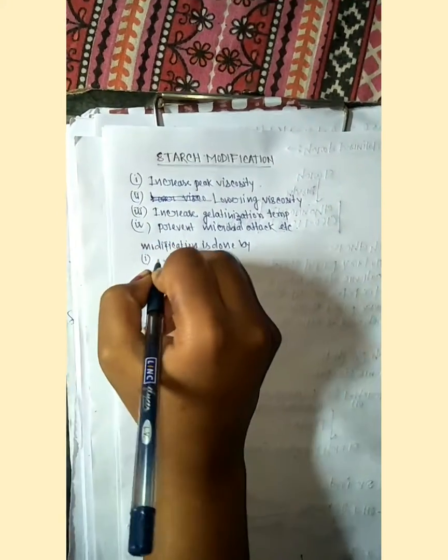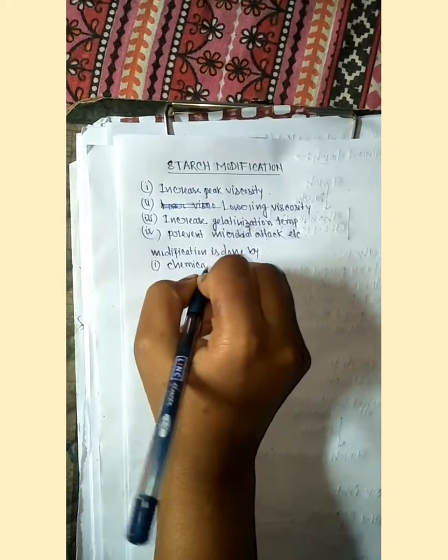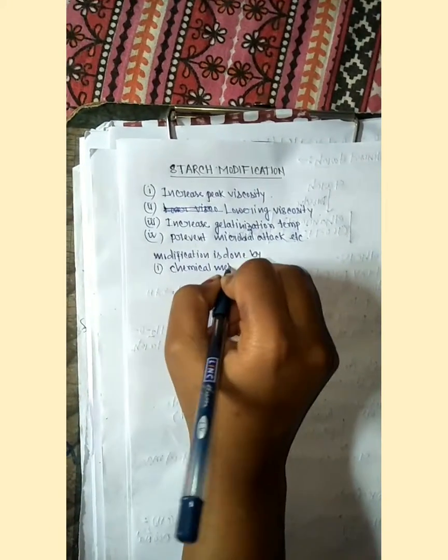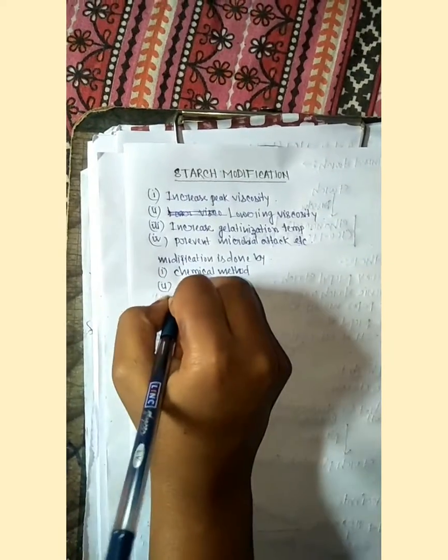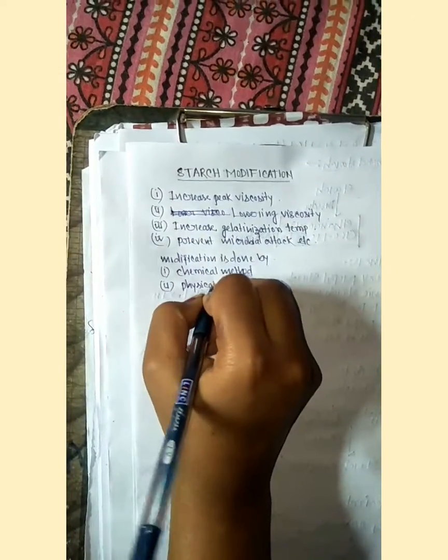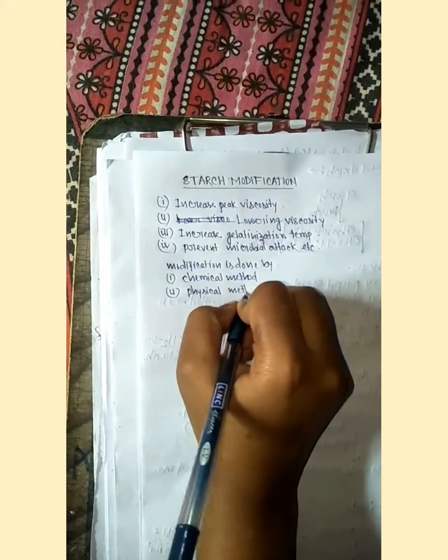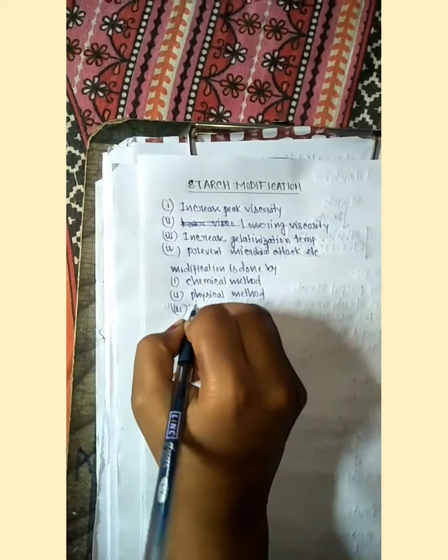Starch modification is done by three methods: one is chemical method, physical method, and genetic method.